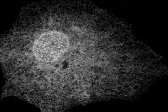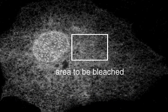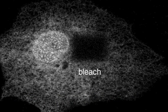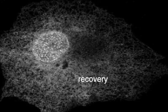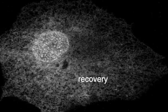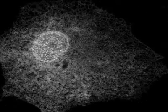Here, GFP is fused to a membrane protein that lies in the membrane network of the endoplasmic reticulum. After bleaching, we observe quick recovery of the fluorescence, showing that the protein is very mobile in the plane of the membrane.